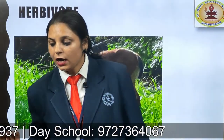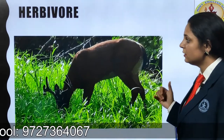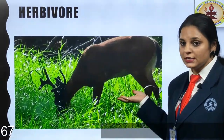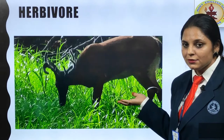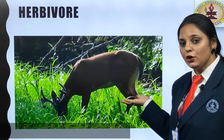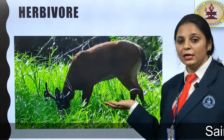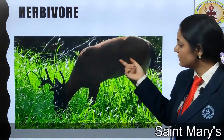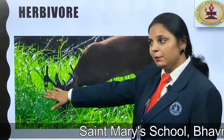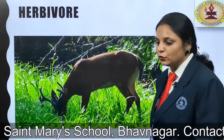The next type is herbivores. Here you can see this animal — the deer — it is grazing. What is it eating? Green plants. Green plants have the property of photosynthesis; they are dependent on sunlight, water, and air. But this animal is dependent on green plants, so they are known as herbivores.